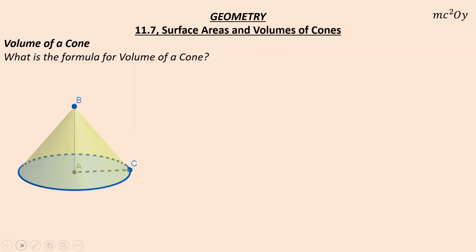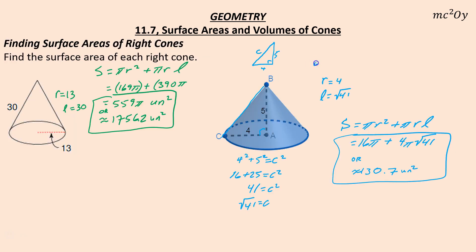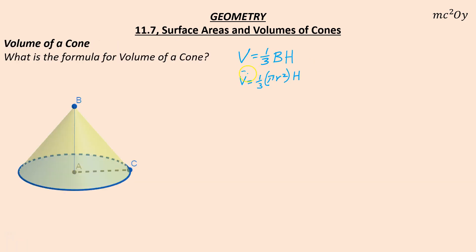Let's talk about volume. Volume of a cone is very similar to volume of a pyramid. Volume of a cone equals one-third the area of the base times the height. In other words, if you had a cylinder with the same base and the same height, it would take three of these cones to fill up that cylinder completely. Since the base is always a circle, we can write it as one-third πr² times h.